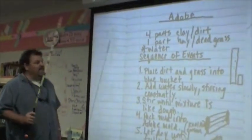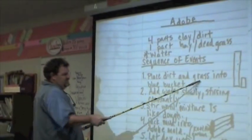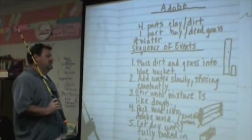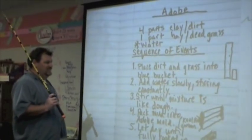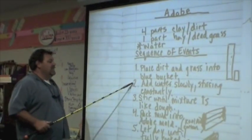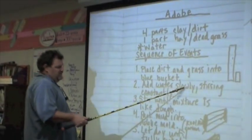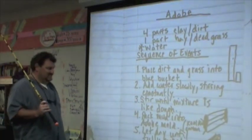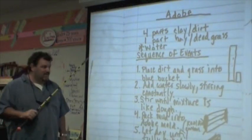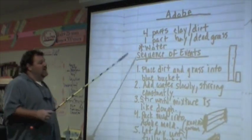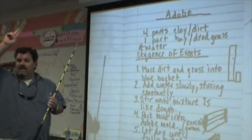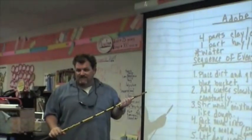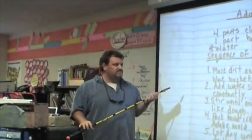Number one in the sequence of events: we stir grass into blue buckets. Number two: add water slowly, stirring constantly. How often do we stir? Constantly. Slowly is an adverb, and stirring is a verb — an action word.